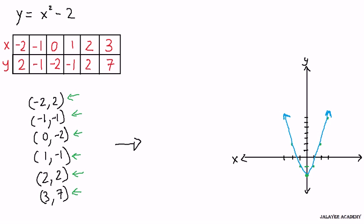So we see that this is the curve of y equals x squared minus 2. And this is what we call, in math, a parabola. This is a parabola.